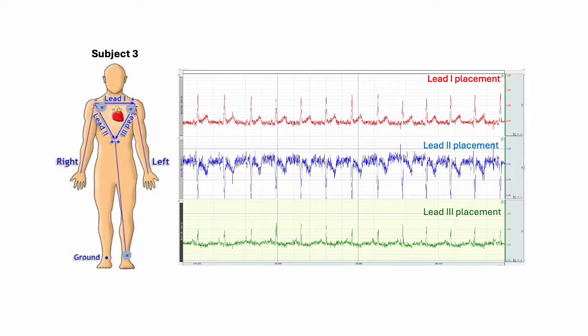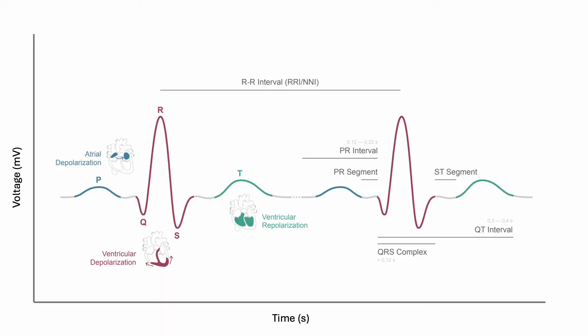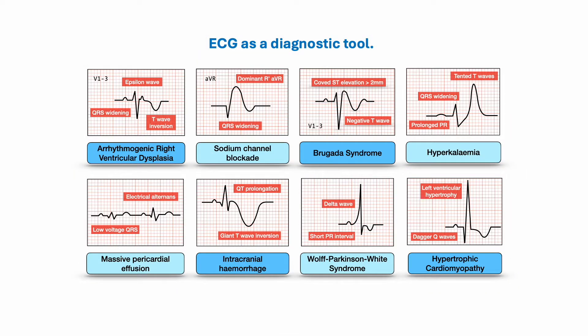But generally, the ECG looks something like this, with each of the peaks representing a different event in the cardiac cycle, such as atrial or ventricular depolarization. Deviations from the shape can be used to help diagnose conditions, such as arrhythmias.